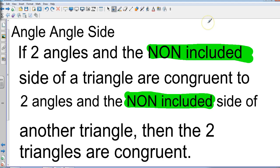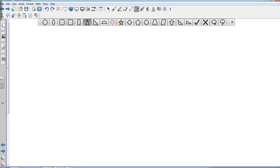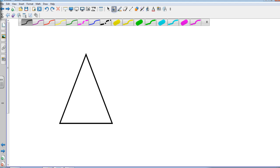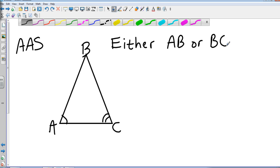Let's look and see what non-included means. I'm going to pull up a triangle again. Let's just call that ABC. If I have Angle Angle Side, let's say that I know what this angle is and I know what this angle is, the non-included side would be either AB or BC. One of those two would be the non-included side. We would not use AC because that would be the included side.